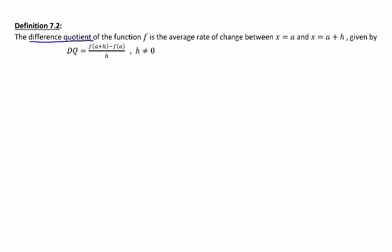The difference quotient is the average rate of change calculation that you did in example 7.3. And this definition backs us up on that.